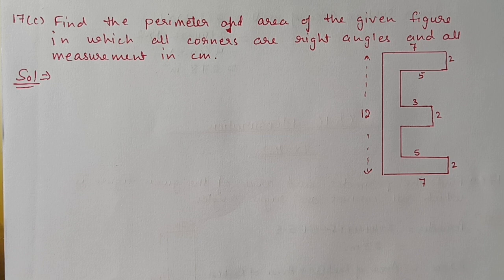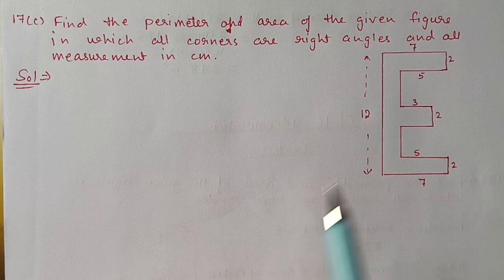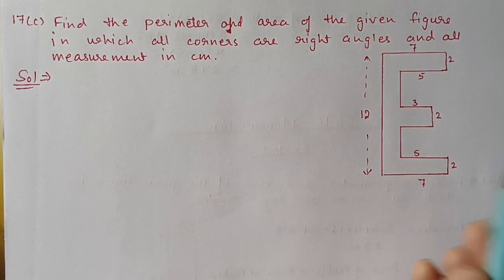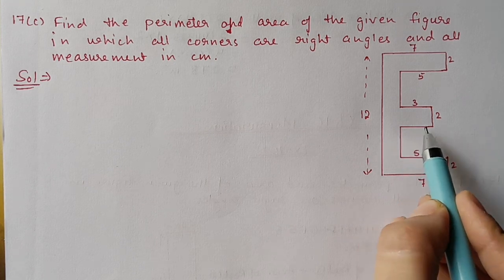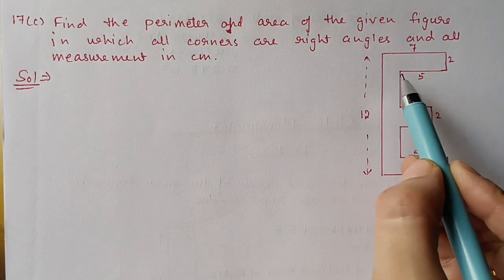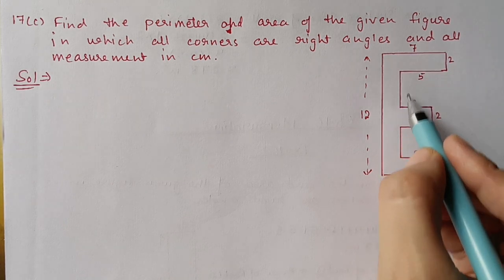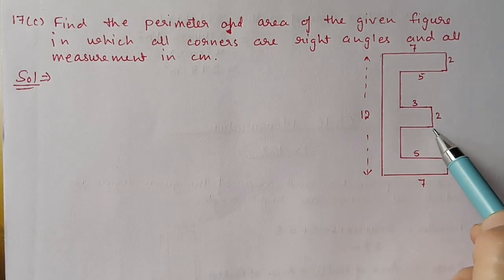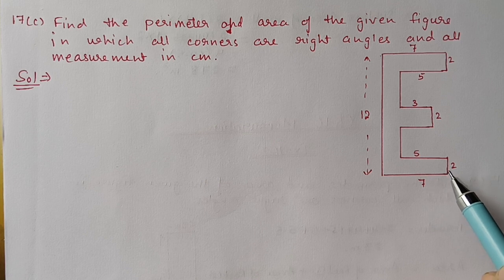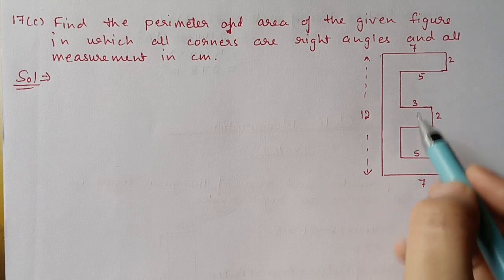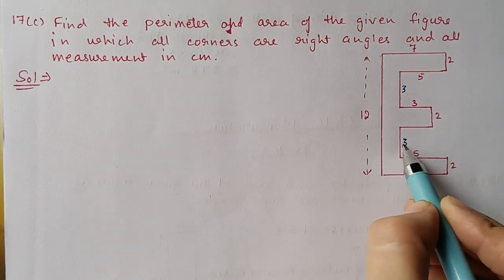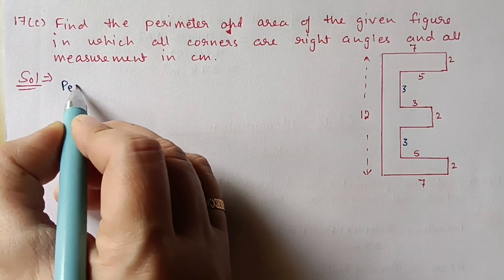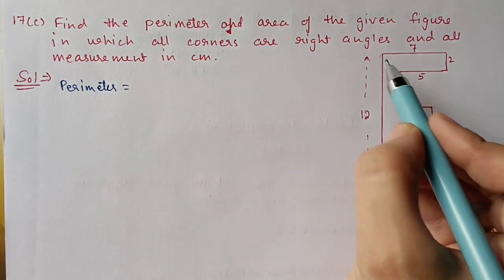Next is Question 17c: find the perimeter and area of the given figure in which all corners are right angles and all measurements are in centimeters. An E-shape figure is given. Measurements include: 12, 7, 5, 3, 2, 2, 5, 7. We calculate the missing side: the total is 12, and with 2 cm, 2 cm, and 2 cm removed, the remaining is 6, which divides equally into 3 and 3.